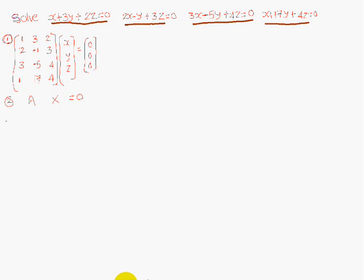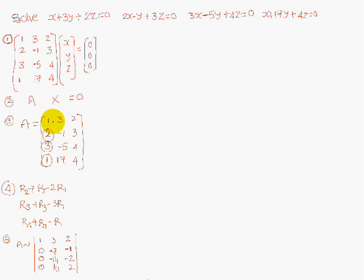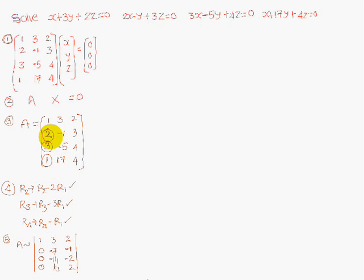Consider only matrix A. To reduce to echelon form, make the elements below the first pivot zero: 2, 3, and 1 should become zeros. Apply R2 → R2 minus 2R1, R3 → R3 minus 3R1, and R4 → R4 minus R1. This gives: first row unchanged as 1, 3, 2; second row becomes 0, minus 7, minus 1; third row becomes 0, minus 10, minus 2; and fourth row becomes 0, 14, 2.